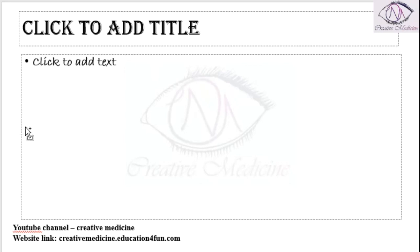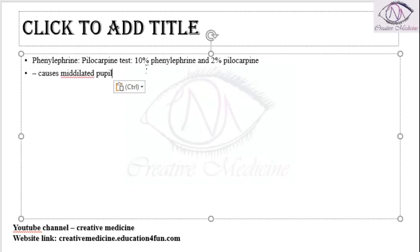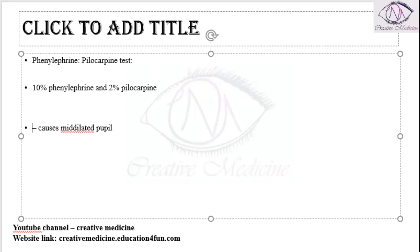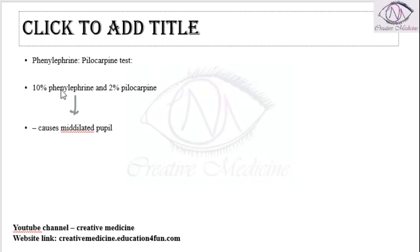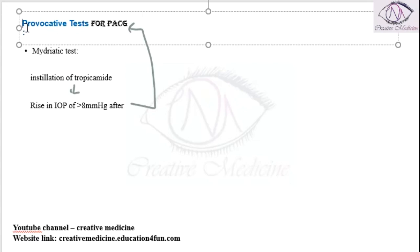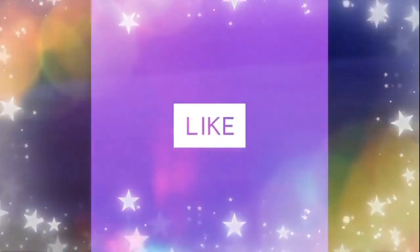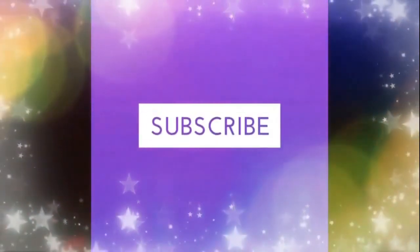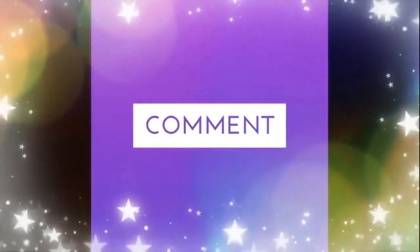Then we have the phenylephrine to pilocarpine test, where you give 10% phenylephrine and 2% pilocarpine. This will result in a mid-dilated pupil. These are the 3 provocative tests for primary angle closure glaucoma. Thank you for watching.